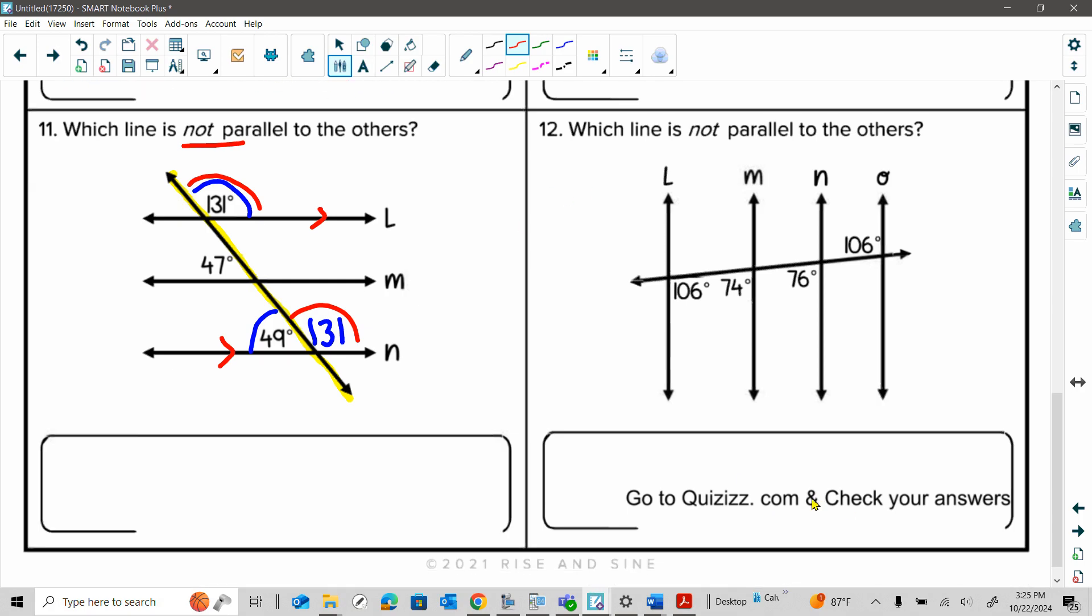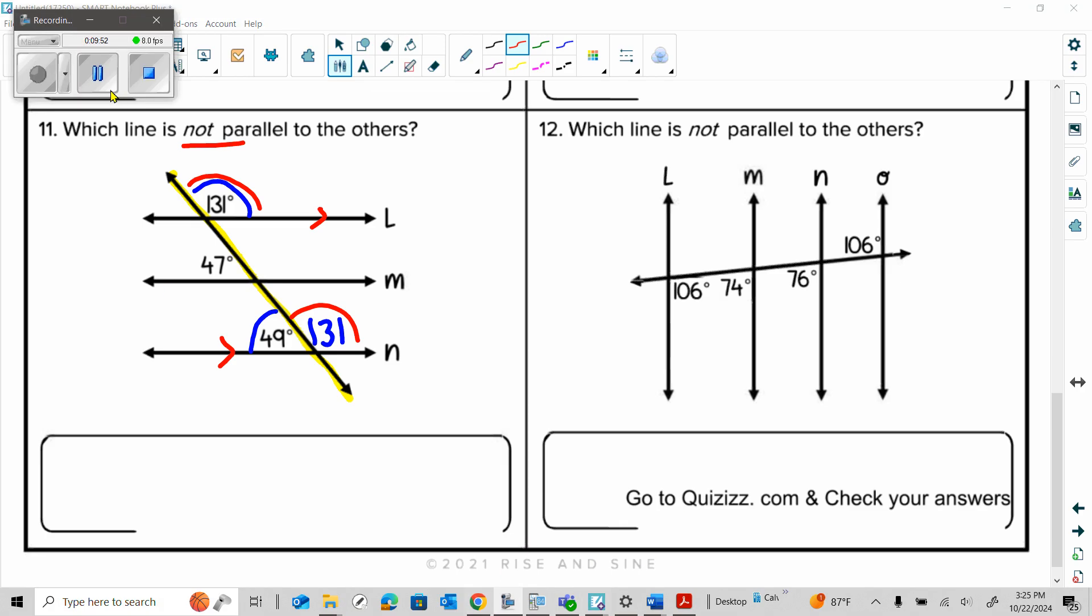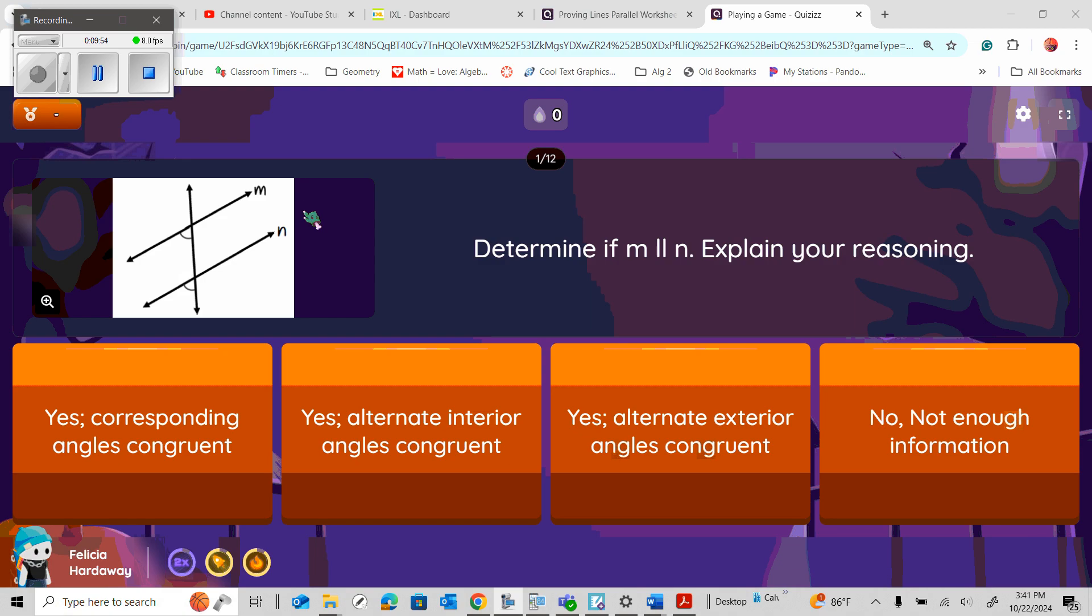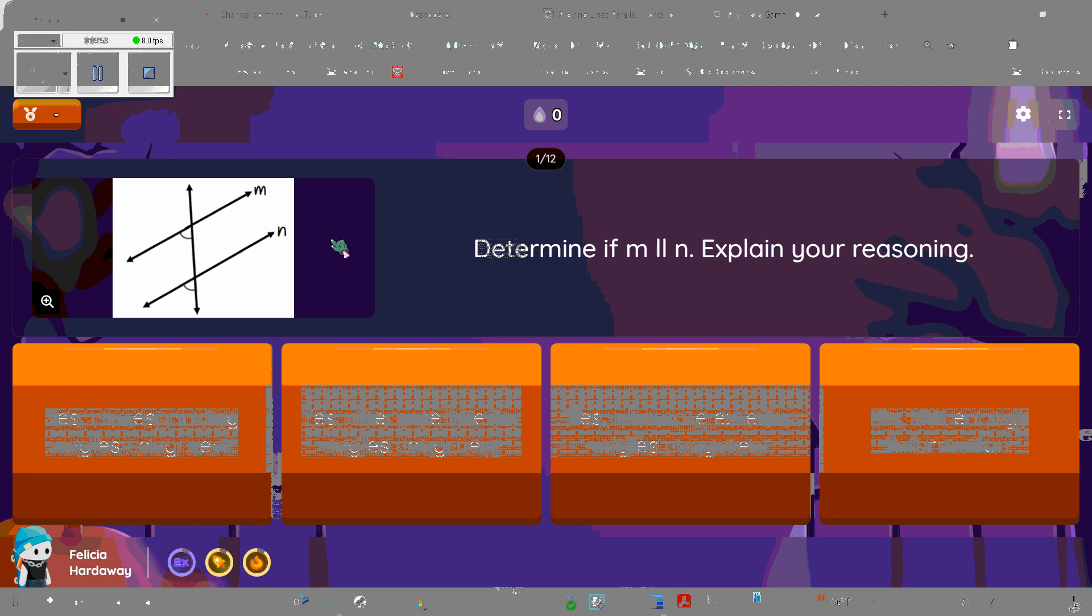And it says right here you're going to go to Quizizz to check your answers. So let me just open that up so I can show you how this works. Hold on just a second. I'm just trying to show you a little preview of what it's going to look like when you go in. So you're going to go in, pick the assignment that has the same title, Proving Lines Parallel. I think I have the same kind of font of the worksheet.